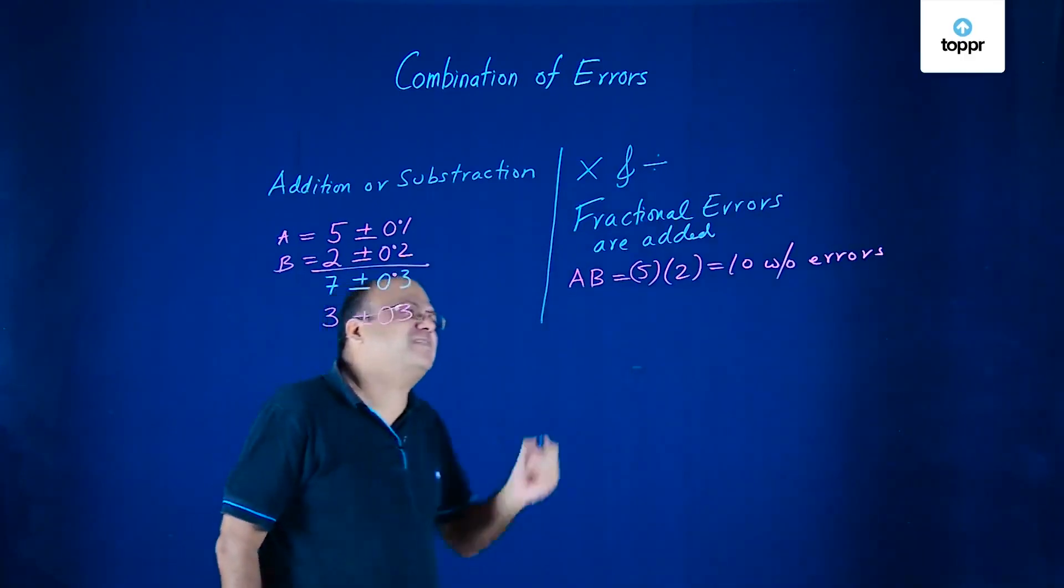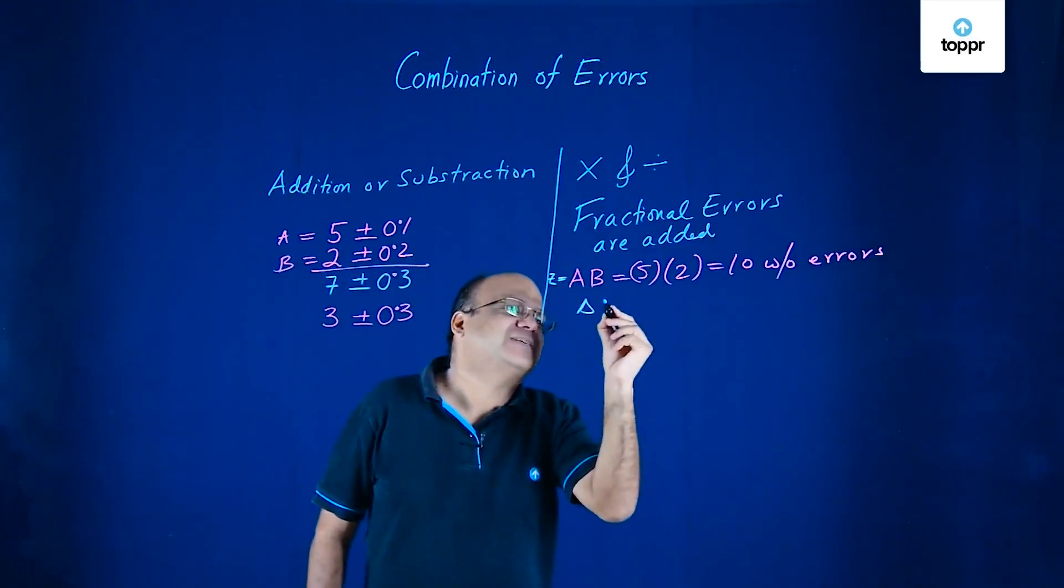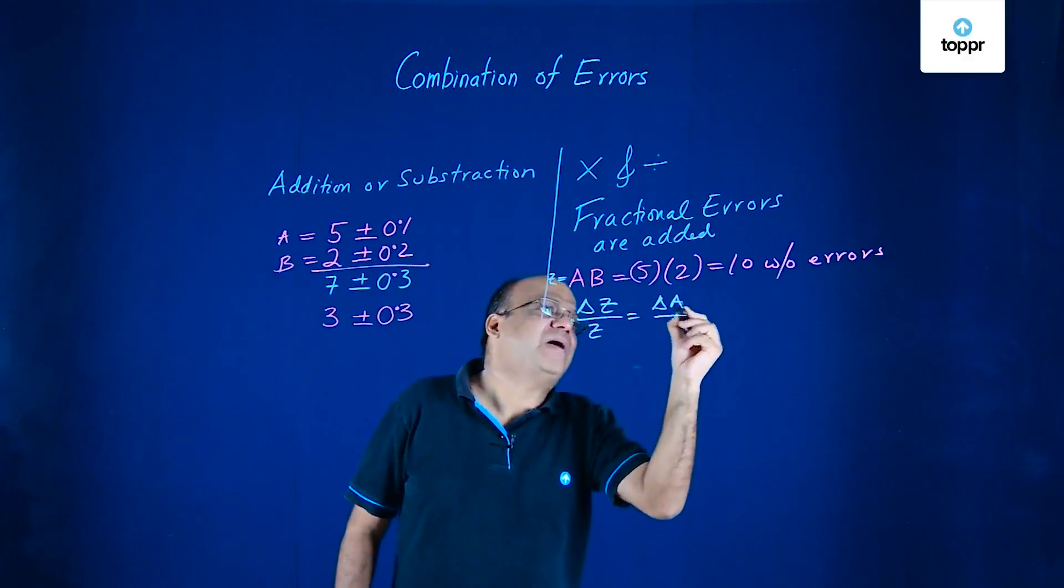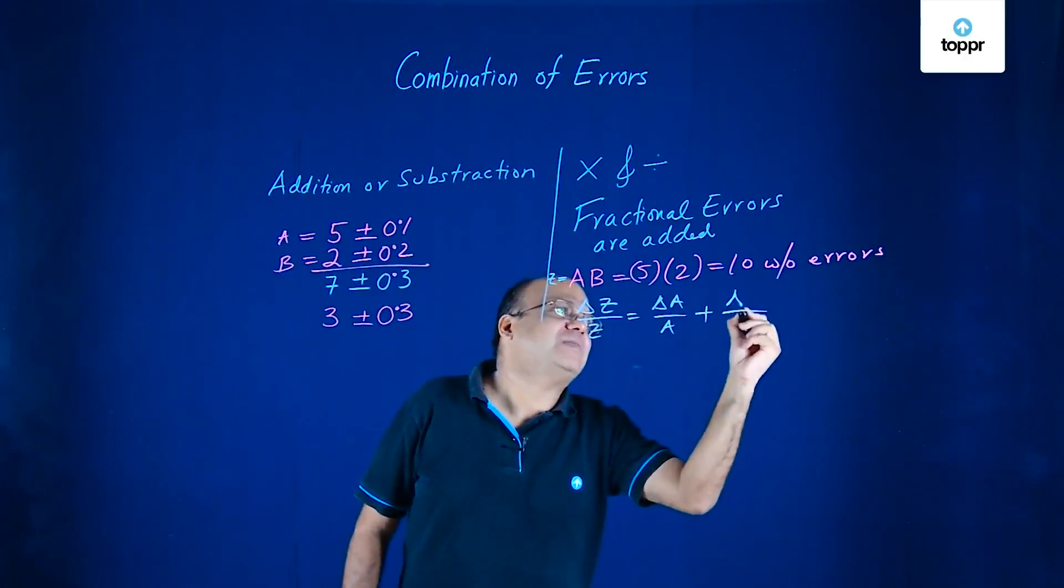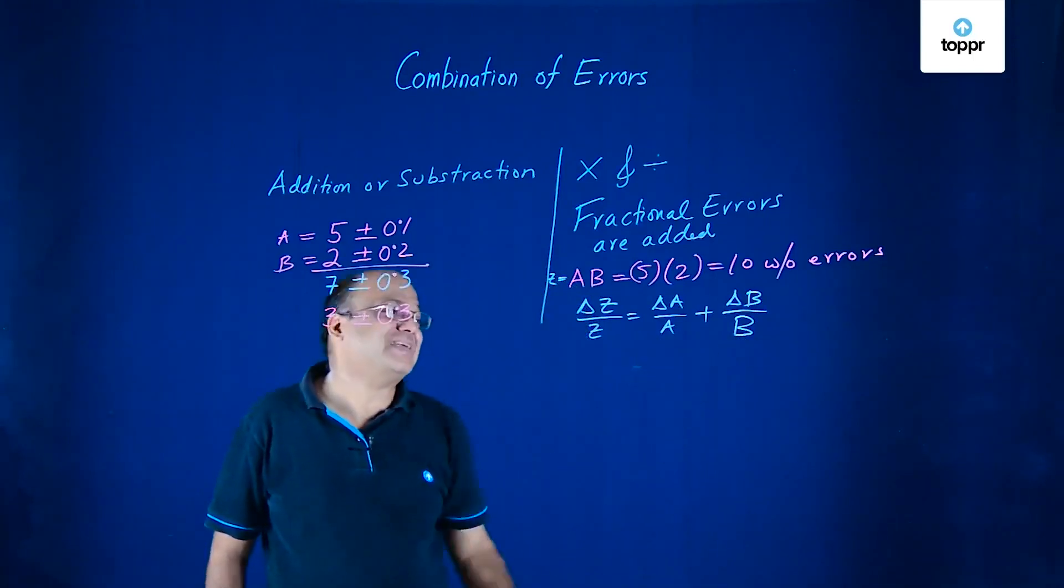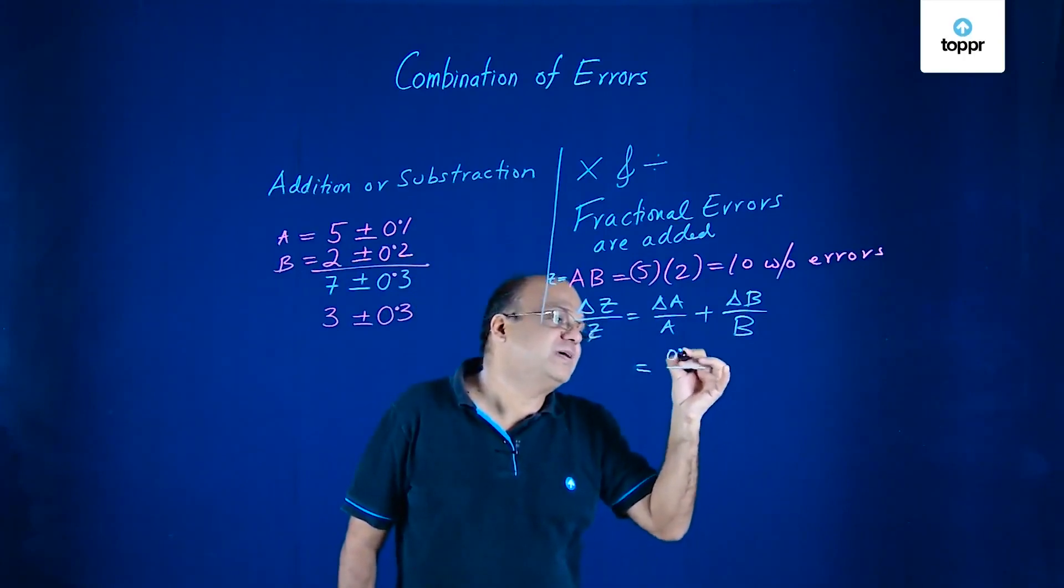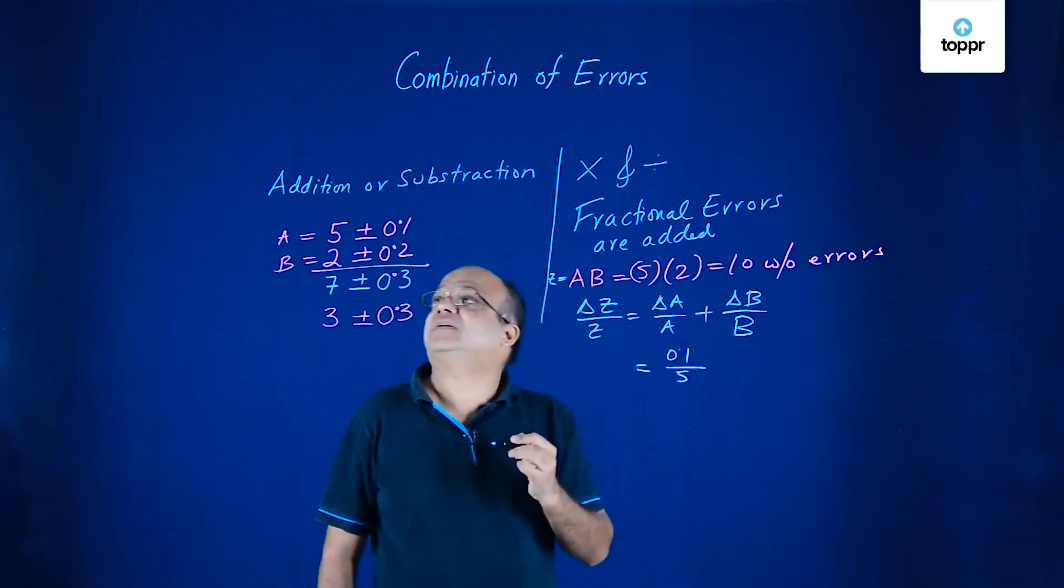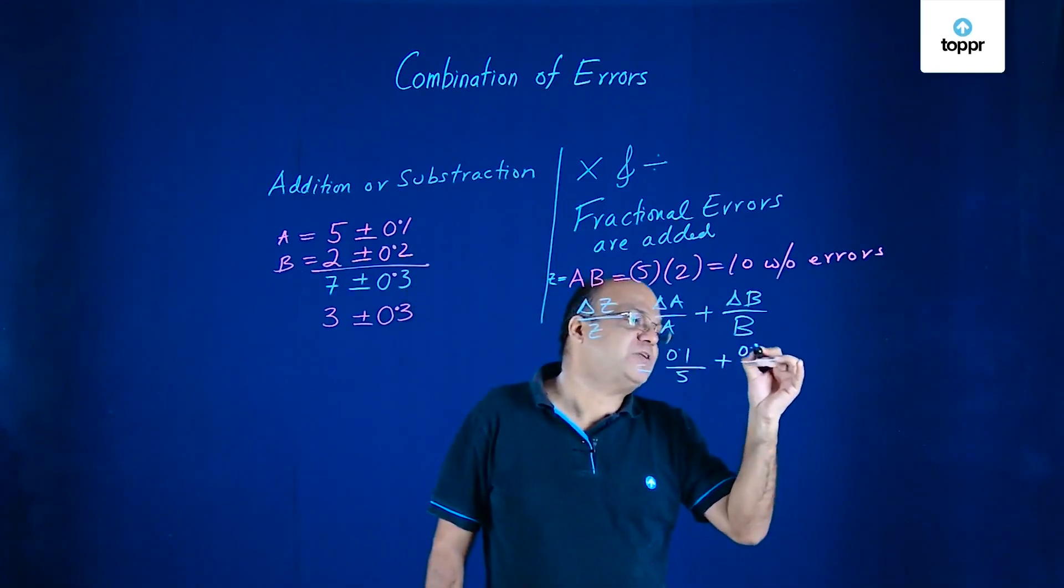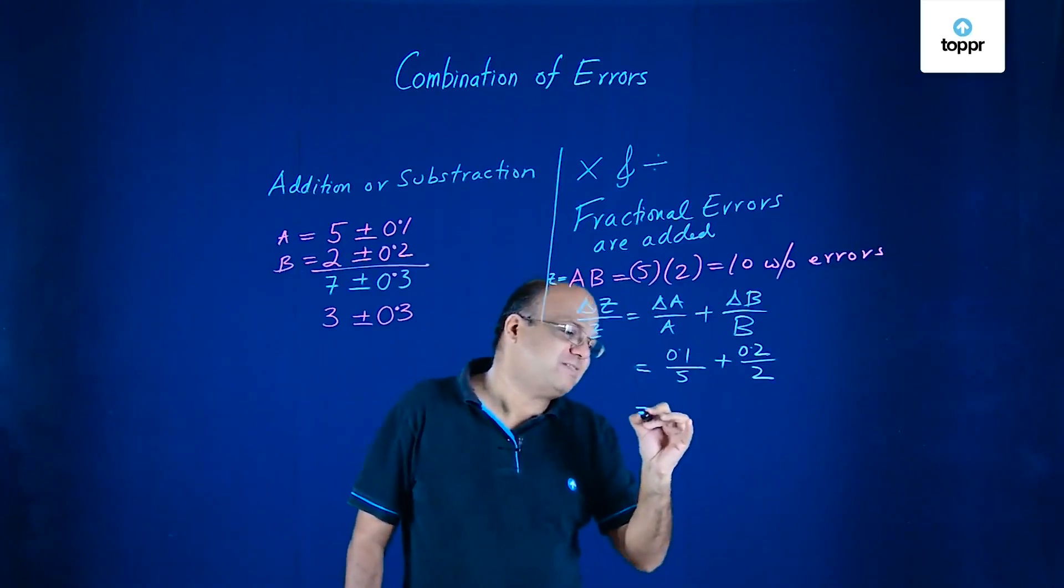So error in Z by Z. Error in Z by Z will be error in A by A plus error in B by B. Fractional errors are getting added. What is error in A? Error in A is 0.1. This is out of 5. A is 5. And error in B is 0.2. And this is 2.